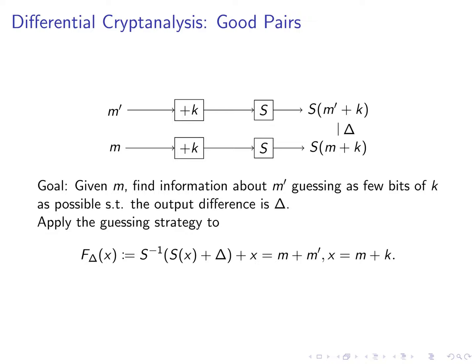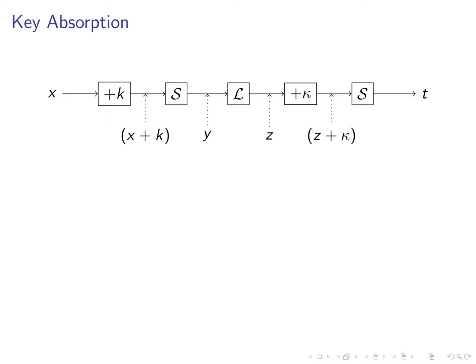Another trick we've used plenty of times which works for linear and differential cryptanalysers alike is key absorption. With it we can join key guesses occurring over multiple rounds. In this example we are given a cipher with two rounds with the linear layer l in the middle. Each round consists of a key addition and an s box layer. We denote the first key by k and the second key by kappa. The input of the first round is x of the linear layer y and of the second round z.